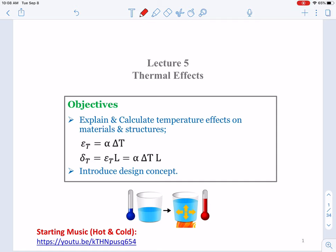The objectives today are listed here. We will explain and calculate the temperature effect on materials and structures. These are the two central equations to calculate the thermal strain εT = α∆T and thermal deformation δT = εTL = α∆TL. We will also introduce some basic design concepts.